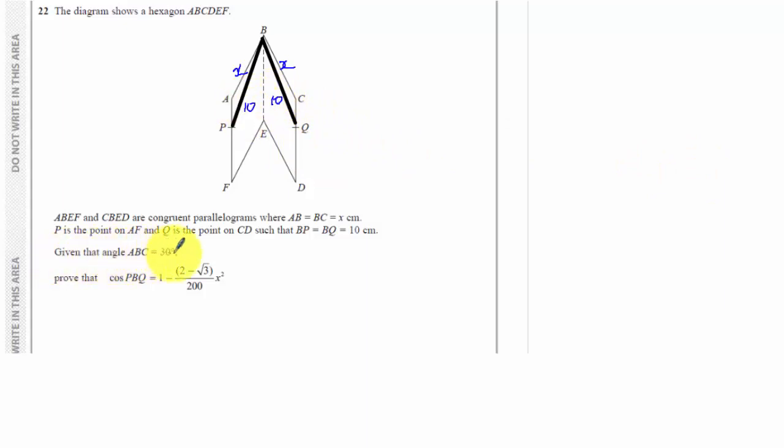Given that angle ABC equals 30, so that would be the bigger one behind the black lines, prove that the cosine of PBQ is 1 minus (2 - √3) over 200 lots of X squared.